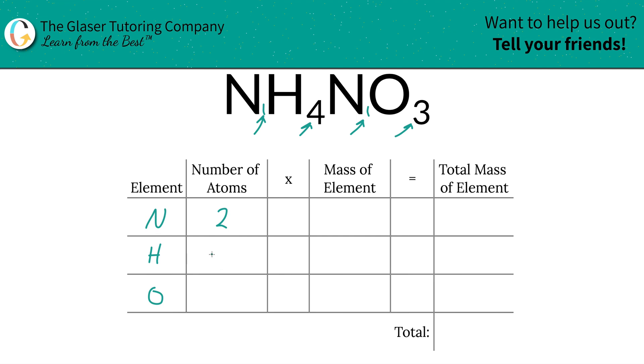Okay, reading way too many bedtime stories to my kids. Number of atoms for hydrogen, we have four, and then three for oxygen.